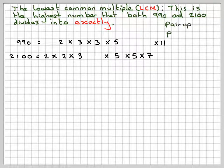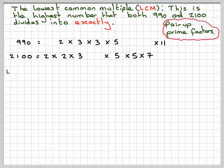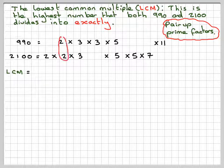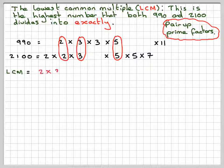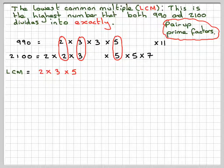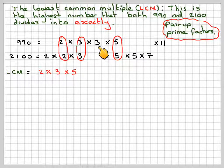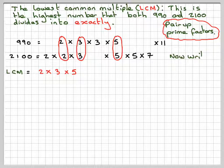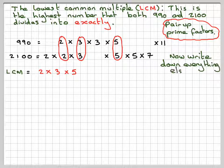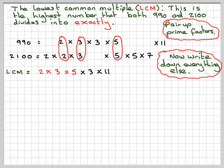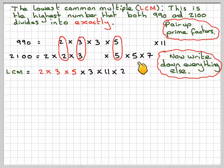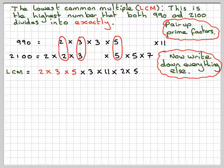What you do is you pair up prime factors which are common: 2, 3, and 5. So that gives you 2 times 3 times 5. Then what you do now is you add in a times 3 times 11, and then also a times 2, a times 5, and a times 7.